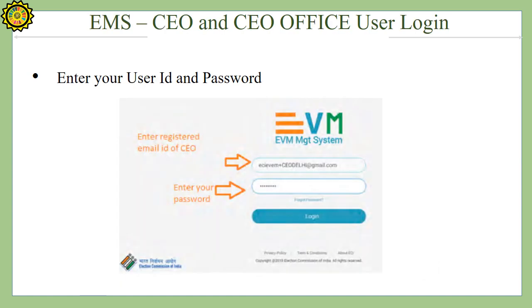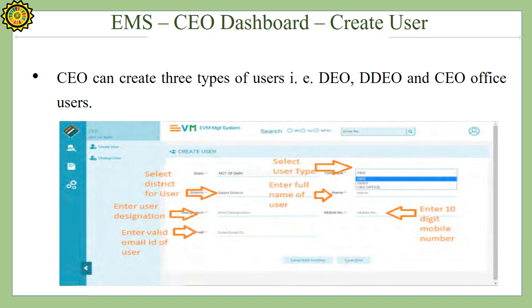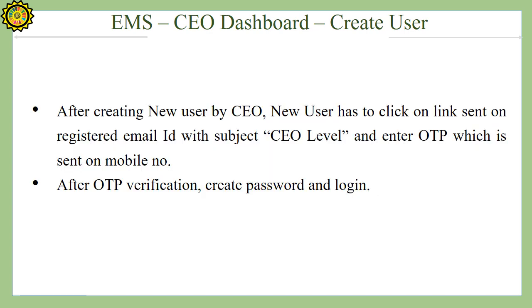The screen for CEO and CEO Office User Login is shown on the screen. Users must enter the user ID and password. Separate sections for search of BU, CU, and VVPAD are available. Users can create users, access services, and generate different reports. CEO can create three types of users: DO, DPDO, and CEO Office Users. After creating a new user, the new user must click on the link sent to the registered email ID with subject 'CEO label' and enter the OTP sent to the mobile number.